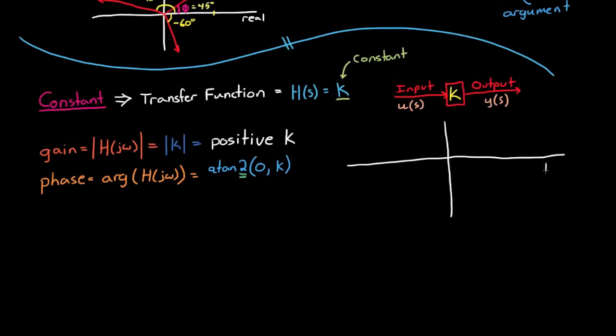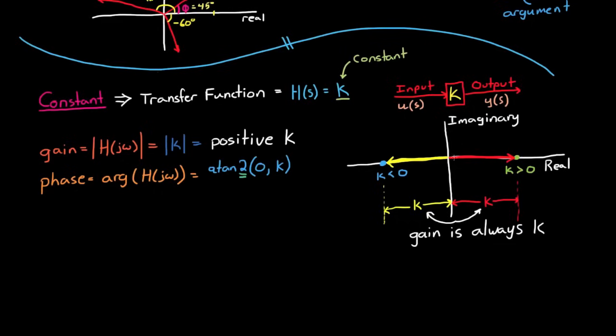Let me explain it this way. If we were to plot this on the real and imaginary axis, then all of the values would lie on the real line, since there is no imaginary component. If k is a positive number, then it'll appear on the right side. And if it's a negative number, it'll appear on the left side. But one thing to note about both of these positions is that whether k is positive or negative, the point still exists exactly a k distance from the origin. And since gain is the distance from the origin, the gain is always k for constants, whether they're positive or negative.